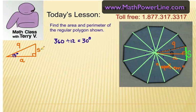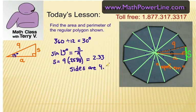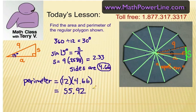Now I can use trig functions to find A and S. Let's find S first. Sine of 15° equals opposite leg S over hypotenuse 9. Cross-multiplying, sine of 15° on the calculator is 0.2588, so 9 times that gives half the side as 2.33. The entire side is double that: 4.66. Therefore the perimeter is 12 times 4.66, which is 55.92. With all the rounding, it could be about 56 whole units — it depends on how precise you want to be. That's the perimeter of the dodecagon.